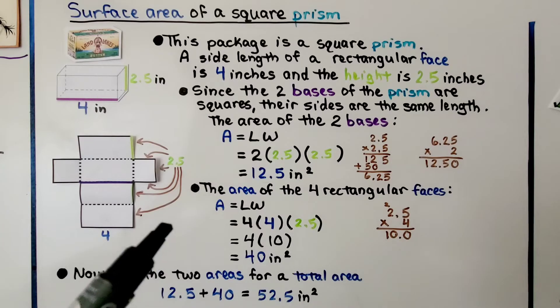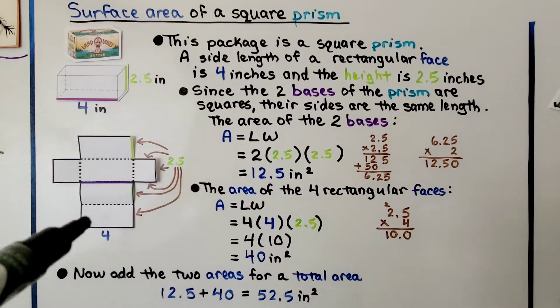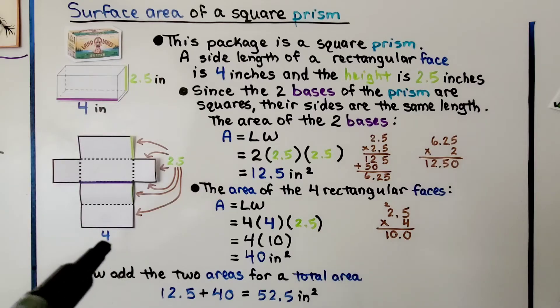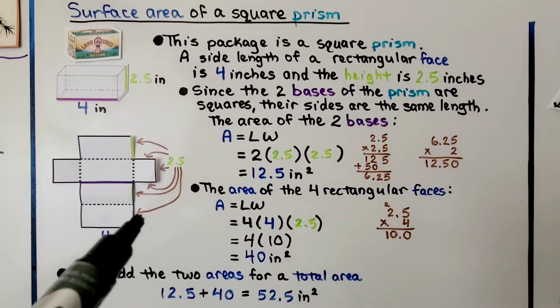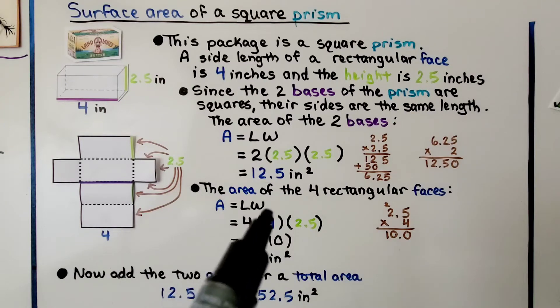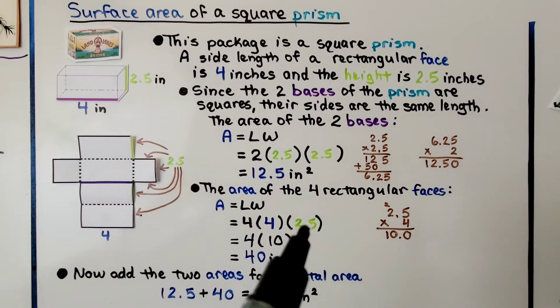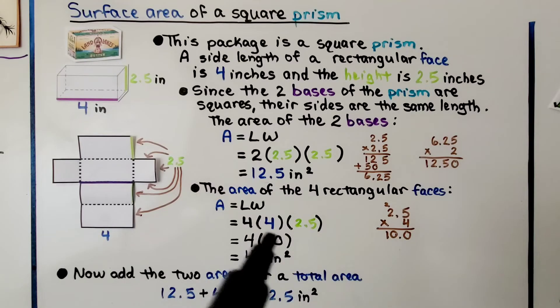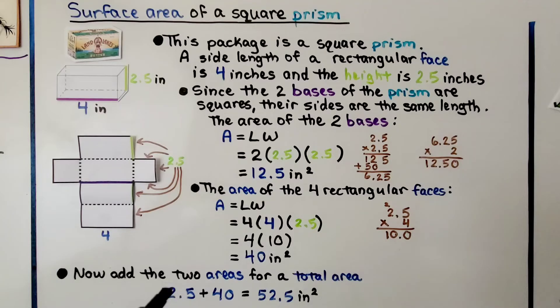The area of the four rectangular faces would be 4 times 2.5, but we have four of them, so we're going to do 4 times 4 times 2.5. 4 times 2.5 is 10. We have 4 times 10. That's 40 inches squared. Now we add the two areas for a total area. We've got 12.5 plus 40. That gives us 52.5 inches squared.